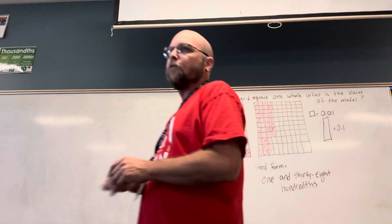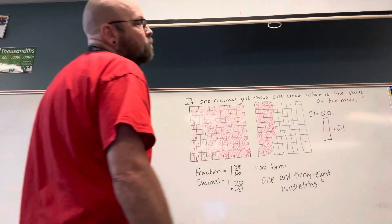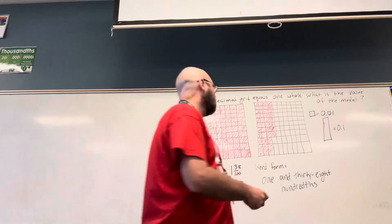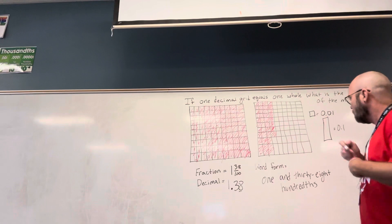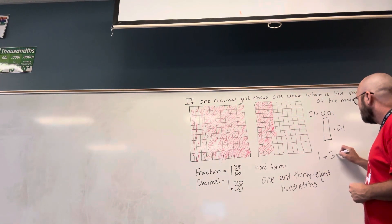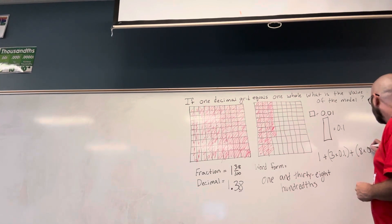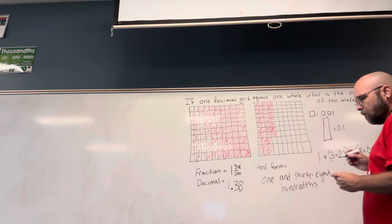So, one and thirty-eight hundredths. If I wanted to go a step further and write it in expanded form, I could do one plus three times one-tenth plus eight times one-hundredth.